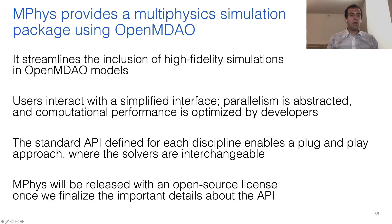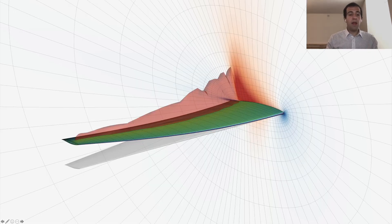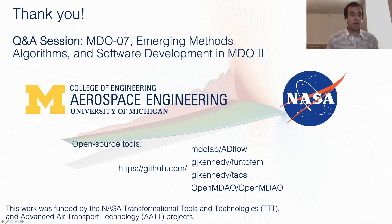To wrap things up, mPhys provides a multi-physics simulation package using OpenMDAO. It streamlines the inclusion of high-fidelity simulations in OpenMDAO models, and users interact with a simplified interface where parallelism is abstracted and computational performance is optimized by developers. The standard API defined for each discipline enables a plug-and-play approach where solvers are interchangeable. Currently, mPhys is not yet released, but it will be released with an open source license once we finalize the important details about the API. Hopefully, with these developments, we can create a common interface for aerostructural and multiphysics simulations. Thank you.